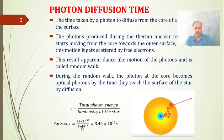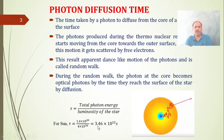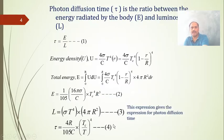Photon diffusion time is the total photon energy divided by the luminosity of a star. The photon diffusion time for the Sun is calculated to be 3.46 × 10¹² seconds.